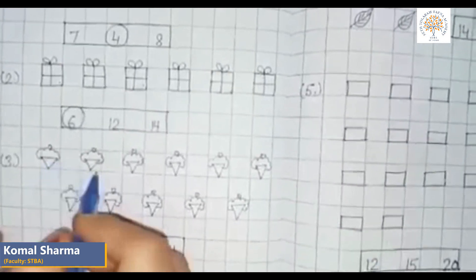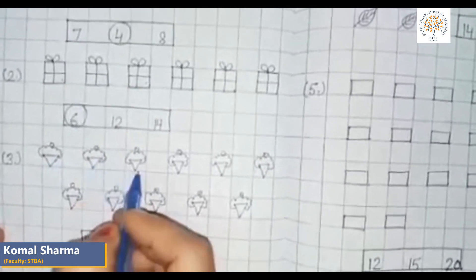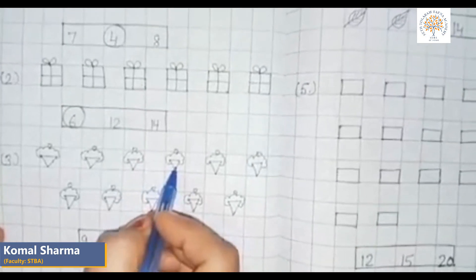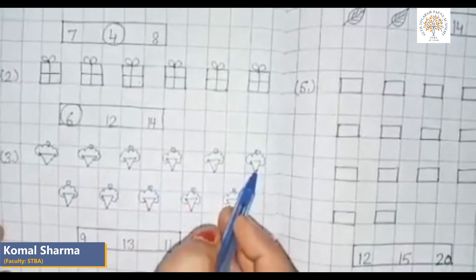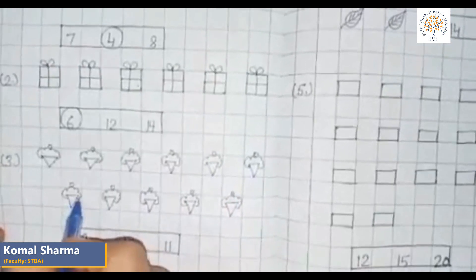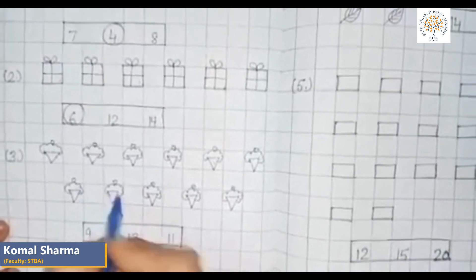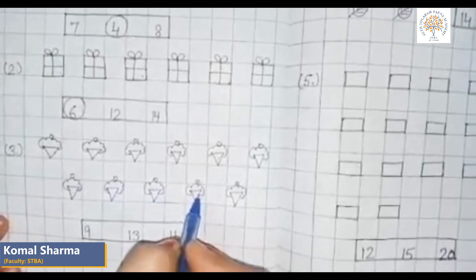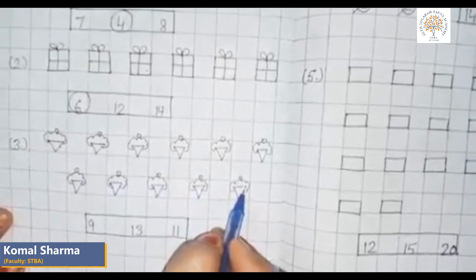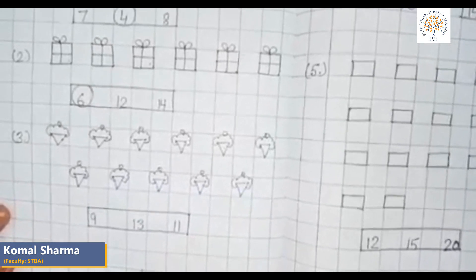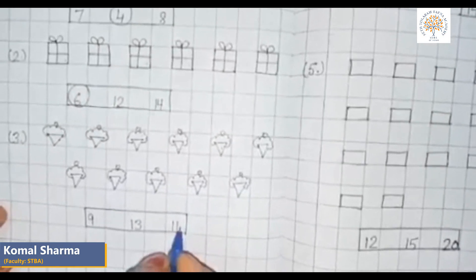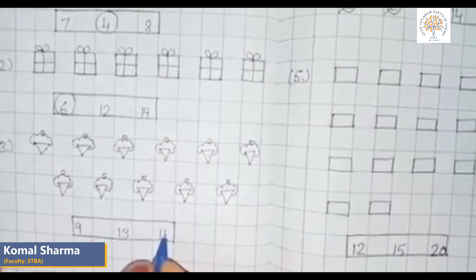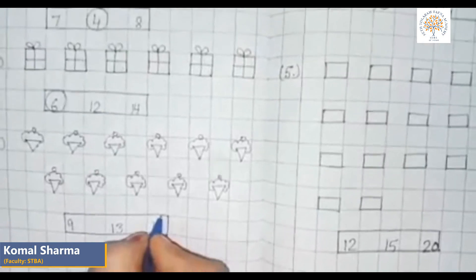One, two, three, four, five, six, seven, eight, nine, ten, eleven. There are eleven ice cream cones. How many cones? Eleven. So we will circle the number eleven.